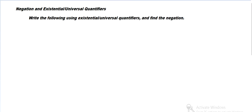We want to write the following using existential and universal quantifiers and then find the negation. For example: every even integer is two times another integer. So that means if we have an even integer, then there's another integer such that two times the second integer equals the even integer.